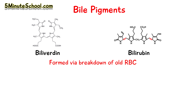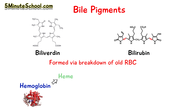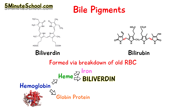These bile pigments are made during the breakdown of old red blood cells, specifically the hemoglobin of the red blood cells. In the reticuloendothelial system, these old red blood cells are broken down and hemoglobin is released. The hemoglobin is then broken down into heme and globin protein. Heme is broken down into iron and the pigment biliverdin, which is then reduced into bilirubin.